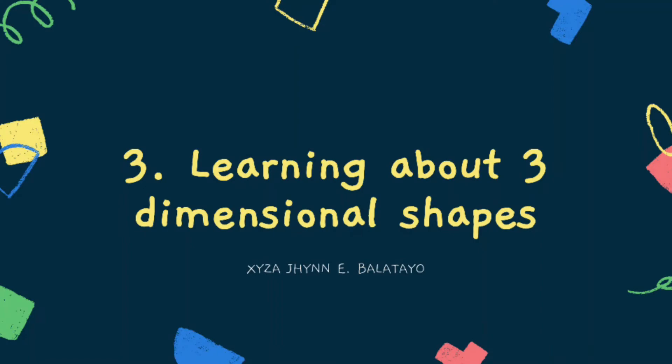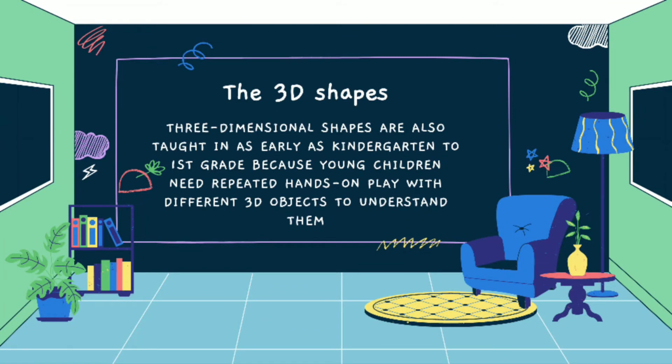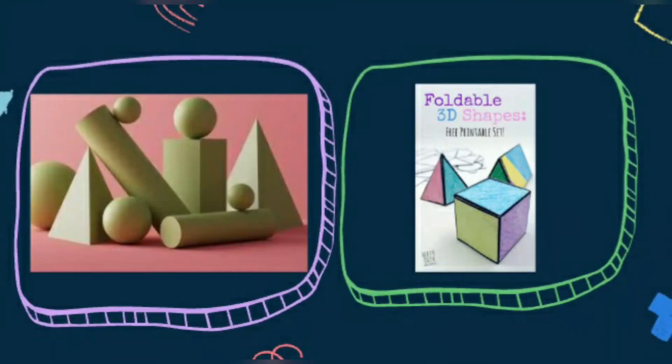The third topic is learning about three-dimensional shapes. Three-dimensional shapes are also taught in as early as kindergarten to first grade because young children need repeated hands-on play with different 3D objects to understand them. They also need clear, accurate information from their teachers to avoid the confusion between surface of two-dimensional shapes and the three-dimensional shapes.